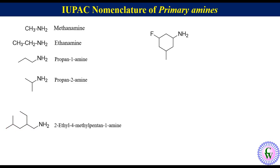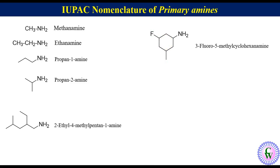Let's have an example of a cyclohexane-based primary amine. Here the cyclohexane ring is the parent hydrocarbon. Numbering will start from the carbon attached to NH₂ and will be in the counter-clockwise direction as 1, 2, 3, 4, 5, and 6. Apart from NH₂ there are 2 more groups attached to the ring: a fluoro at C3 and a methyl at C5. Since by default the carbon attached to NH₂ is number 1, there is no need to mention it in the IUPAC name. So the IUPAC name will be 3-fluoro-5-methyl-cyclohexanamine.